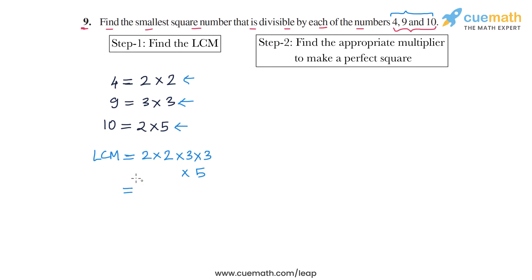So the LCM of these numbers is 2 into 2 into 3 into 3 into 5. If you want, you can write this as a number also. This is 4 into 9, 36 into 5, 180. But we will be basically using the prime factorized form of the LCM for the next step.